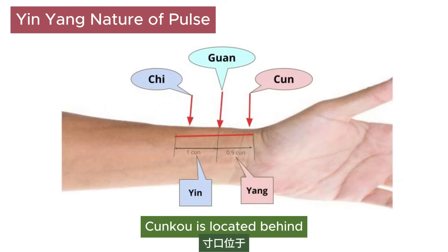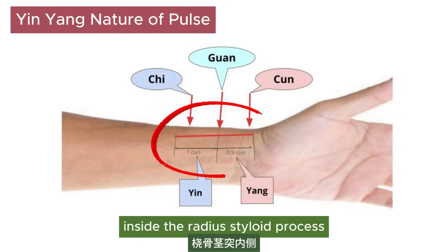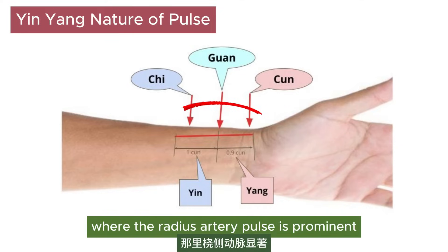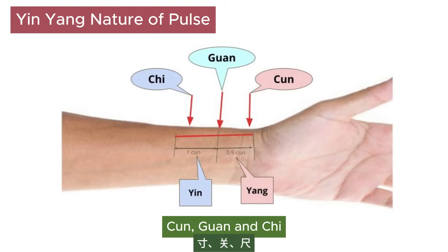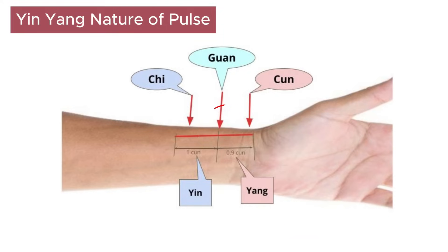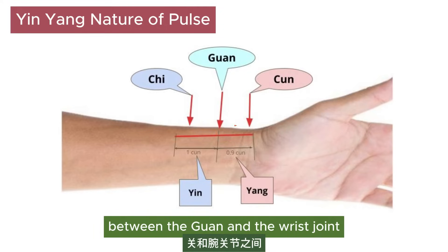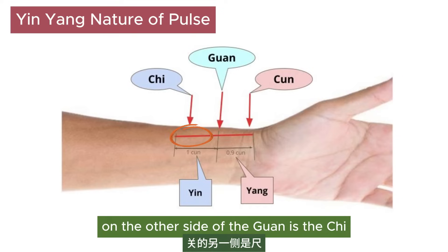Wengkou is located behind the transverse crease on both wrists, inside the radial styloid process, where the radial artery pulse is prominent. Wengkou is divided into three portions: cun, guan, and chi. The prominent bone, which is the radial styloid process, marks the guan. Between the guan and the wrist joint is the cun, and on the other side of the guan is the chi.